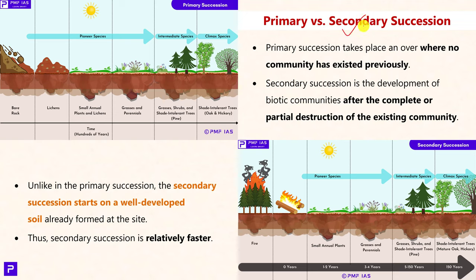The key differences between primary and secondary succession: in primary succession, everything begins in a landform where no prior community has existed, whereas in secondary succession it begins where a community has ended. Since it takes a long time for soil to develop in primary succession, each successional stage is quite long, and the overall succession can take hundreds of years. In secondary succession, it begins on already well-developed soils, so each series is of very short duration and overall succession is relatively faster.